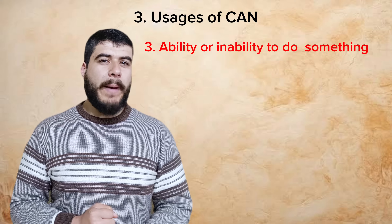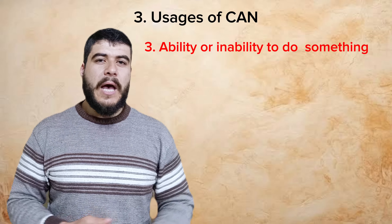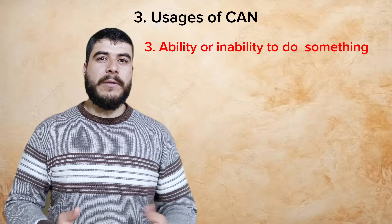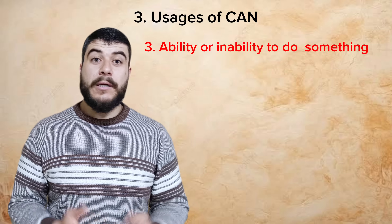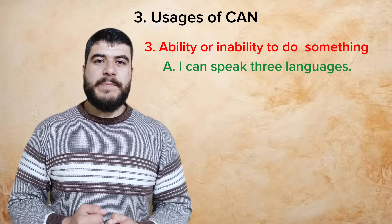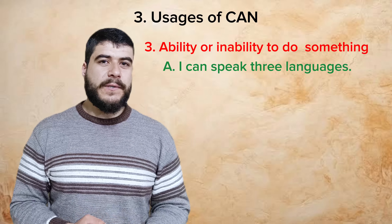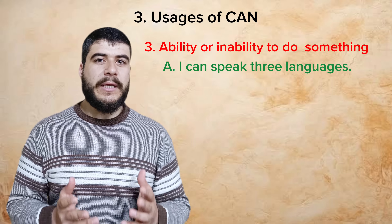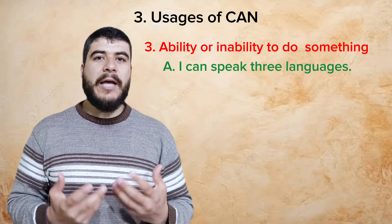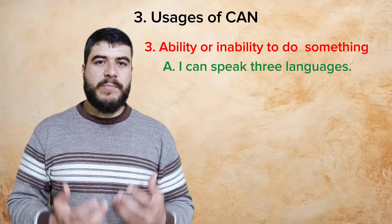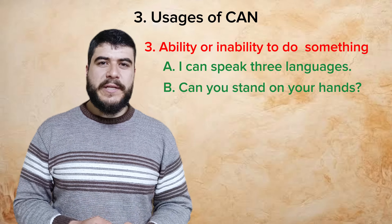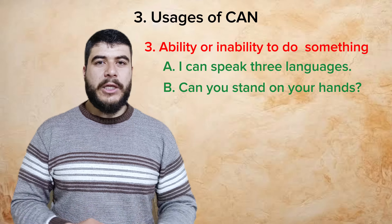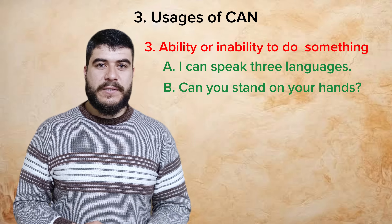If you are going to talk about ability — whether you are able or unable to do something — you can use "can." For example: "I can speak three languages" means I'm able to speak three languages. And in a question: "Can you stand on your hands?"